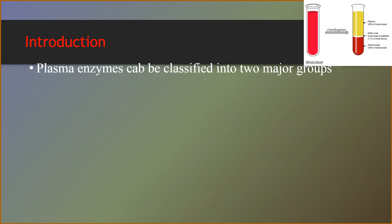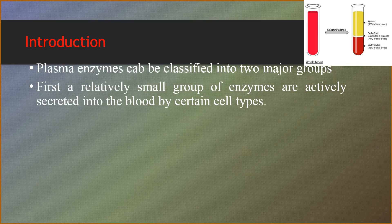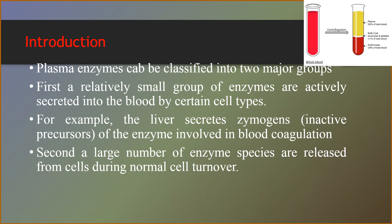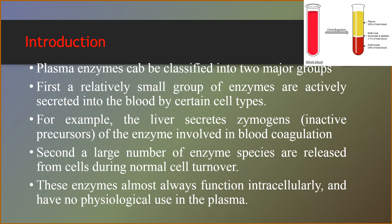Plasma enzymes can be classified into two major groups. First, a relatively small group of enzymes are actively secreted into the blood by certain cell types. For example, the liver secretes zymogens, inactive precursors of the enzymes involved in blood coagulation. Second, a large number of enzyme species are released from the cell during normal cell turnover.